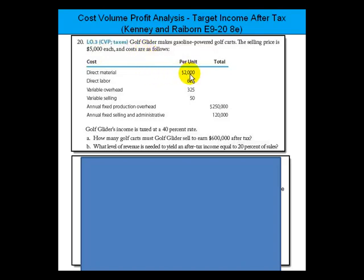Direct material is $2,000 per cart, labor is $625, variable overhead is $325, and there's $50 of variable selling cost per cart. The annual fixed production overhead is $250,000, and the annual fixed selling and administrative costs are $120,000.